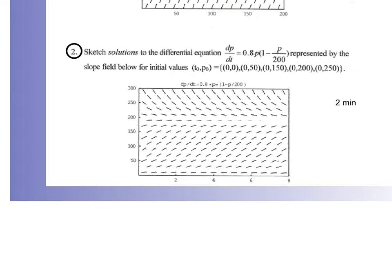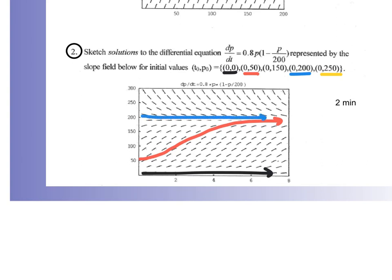Let's do another solution curve on this slope field — looks like the asymptote is located in a different position now. So (0, 0): a population can't grow if there's nothing to start with, so I'd err on the side of caution there. (0, 50) is going to do something like this. (0, 200) is going to just creep along there. And (0, 250) would be kind of like that. That is the intro to differential equations and slope fields.